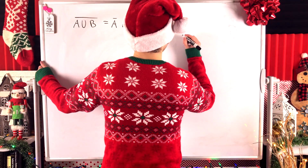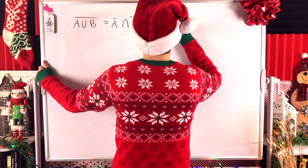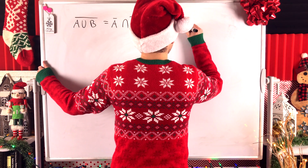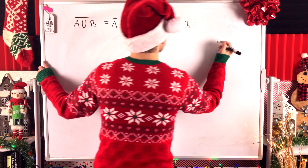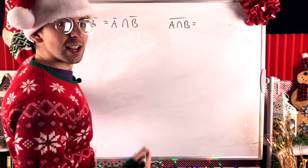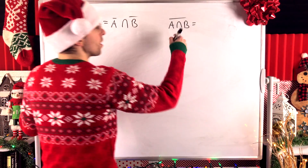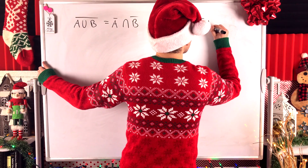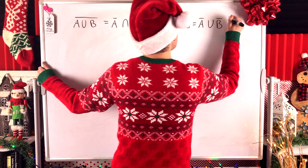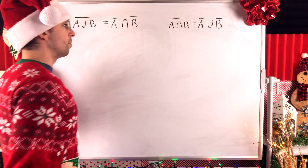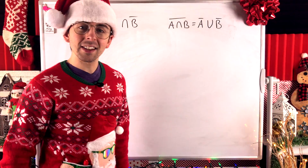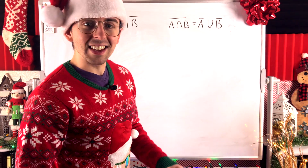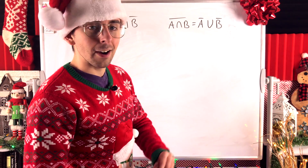The other DeMorgan's Law tells us how set complement works with intersection. If we take the complement of A intersect B, same sort of idea — negate the three symbols. A becomes A complement, intersection becomes union, and B becomes B complement. So the complement of A intersect B is the complement of A union with the complement of B.